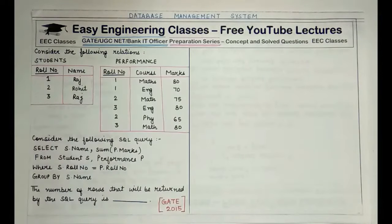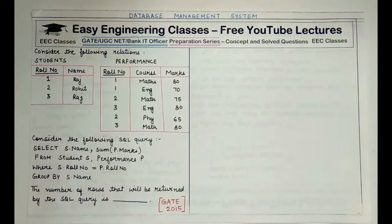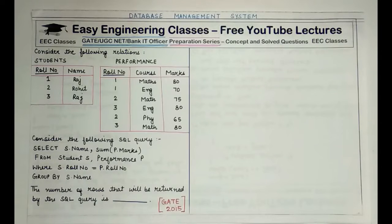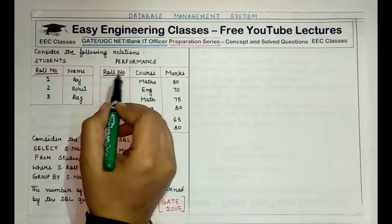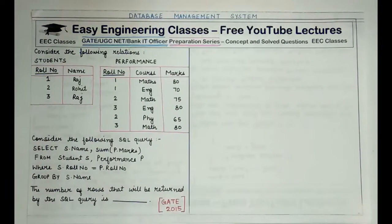Consider the following relations. The relations are Students and Performance, and we are given two tables. The Students relation consists of two columns: role number and name. The Performance table consists of role number, course, and marks. Both these relations have role number as the primary key.